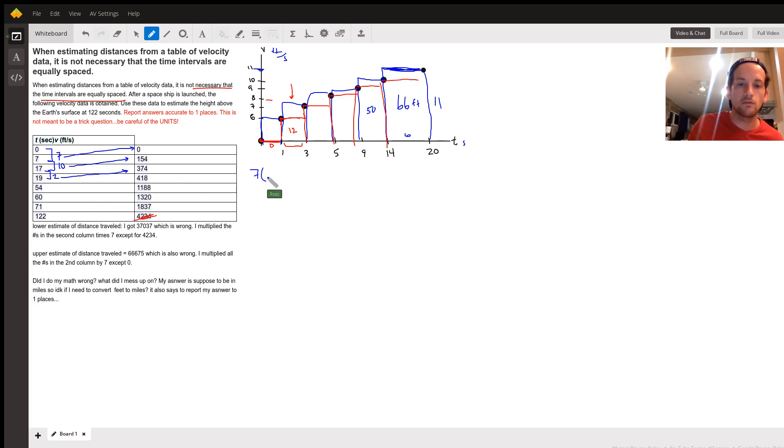So the idea there is the lower limit, the left-hand Riemann sum would be 7 times 0, plus 10 times 154, and you'd keep doing that until the end, where you do 51, I believe, times 1837. When you do that, I got an answer of 132,253, and that's in feet. Now you did mention needing an answer in miles and needing to round to one decimal place. I do think you need to convert that, so you would divide by 5,280 feet to get to miles, and that is a decimal that you would have to round. But that would be the lower limit. That's the one I got.